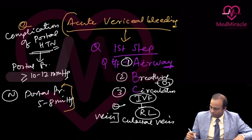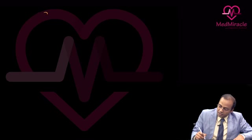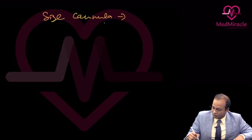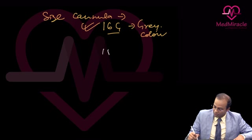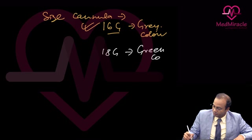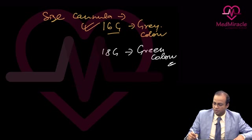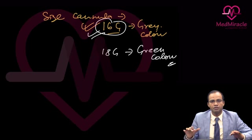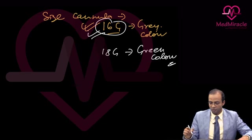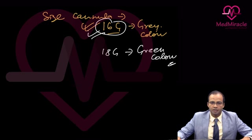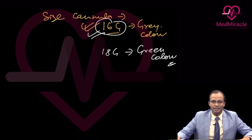The preferred cannula size is 16 gauge needle, which is gray color coded. If not available, you can use 18 gauge needle, which is green color. The 16 gauge is preferred because it allows wider and more rapid transfusion. So in acute variceal bleed, we manage first by establishing the airway, starting breathing with oxygen, and then establishing circulation — following ABC.